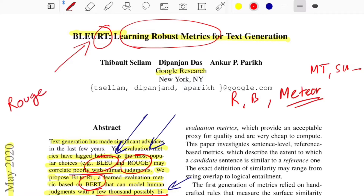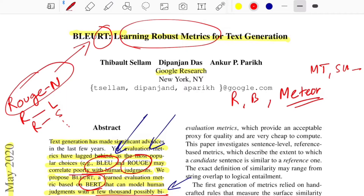Talking about ROUGE, there are many variants: ROUGE-N, ROUGE-L, ROUGE-S, and a couple more. ROUGE is a very common metric for evaluating summarization systems, with people mostly using variations of ROUGE-N, where N stands for n-gram number. If N equals 1, you are looking at unigrams; if N equals 2, you are looking at bigrams. L stands for Longest Common Subsequence between the generated text and the original text, and S stands for skip bigram.